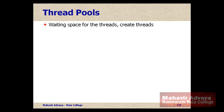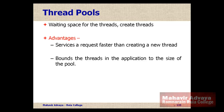Thread pools are essentially a waiting space for threads — like a buffer where threads wait to handle requests from a process. In a web server, for example, threads are created to handle the number of requests generated by users. The advantage of a thread pool is that it services requests faster than creating a new thread each time.